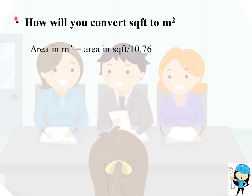How will you convert square feet to square meters? This is an important question. The area in square meters is equal to the area in square feet divided by 10.76.